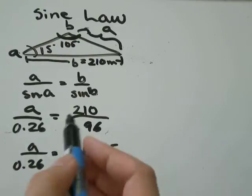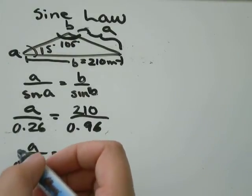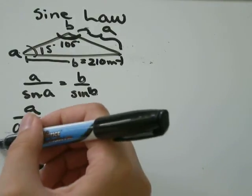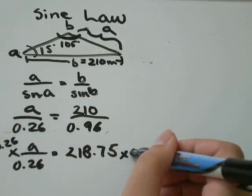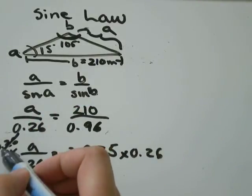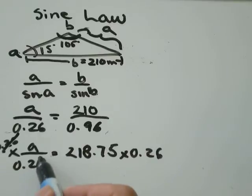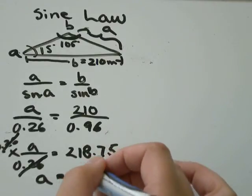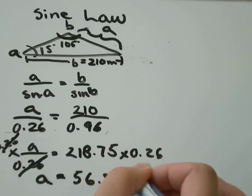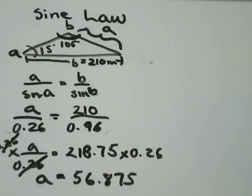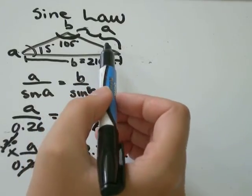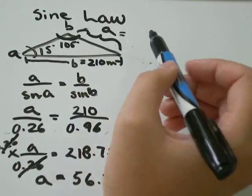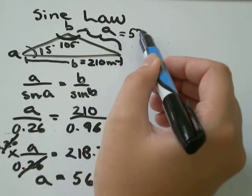To get A by itself, I'm just going to multiply both sides by 0.26. So that's 0.26 — we'll cross out that 0.26 — and I'll get A equals 218.75 times 0.26, which is equal to 56.875. So all that tells me is that the length of this side on my triangle is approximately equal to 57 meters.